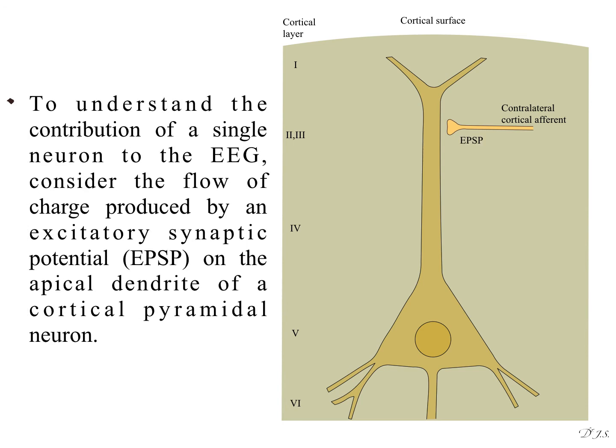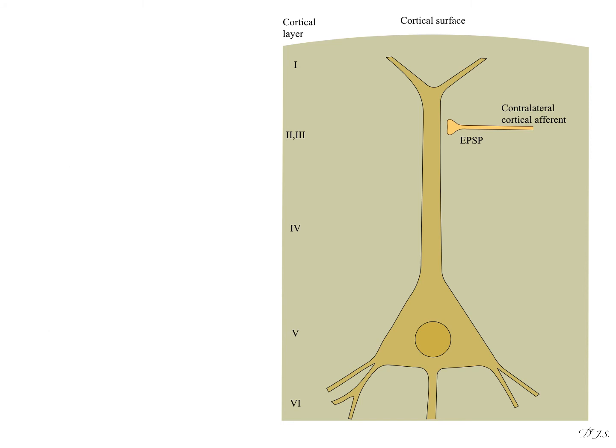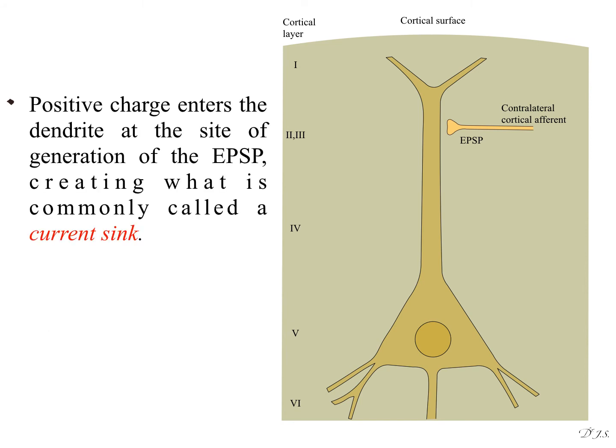To understand the contribution of a single neuron to the EEG, consider the flow of charge produced by an excitatory synaptic potential (EPSP) on the apical dendrite of a cortical pyramidal neuron. Positive charge enters the dendrite at the site of generation of the EPSP,